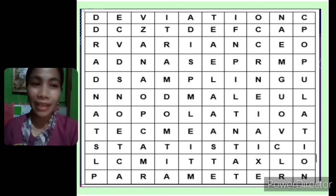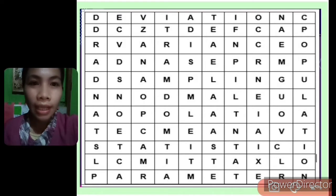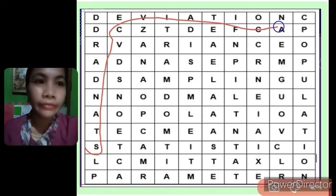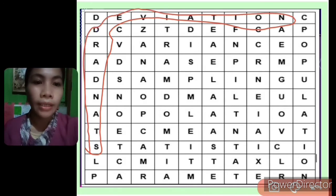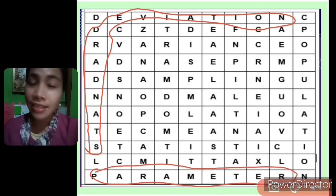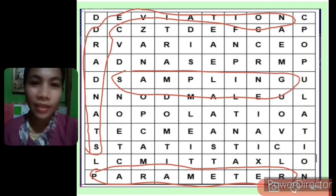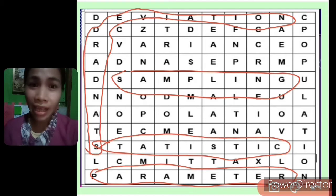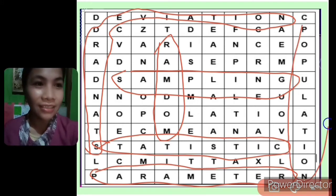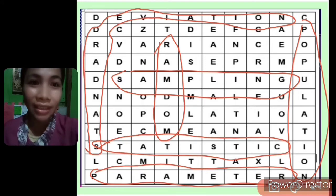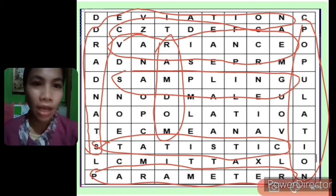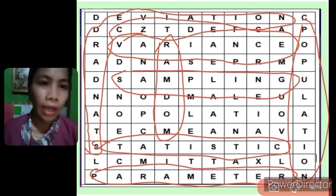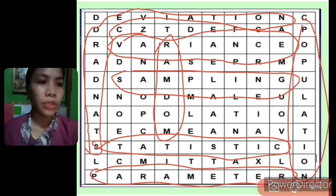We have eight words to find. The first is standard deviation, next is parameter, next is sampling, then statistic, then random, then population, and last is variance. Let's count: one, two, three, four, five, six, seven, eight — okay, eight words.